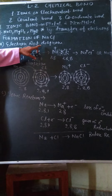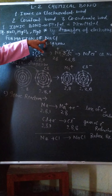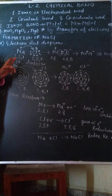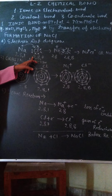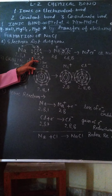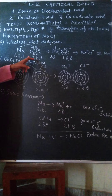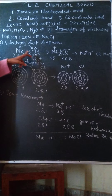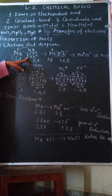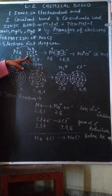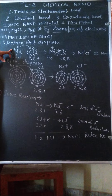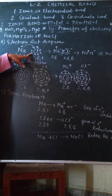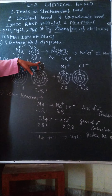So, for the electron dot diagram for the formation of sodium chloride, first we have to make the Lewis structure of sodium and chlorine. What is Lewis structure? In my previous video, I have explained it. Representation of valence electrons with the help of dots or crosses is called Lewis structure. Sodium has one valence electron and chlorine has 7 valence electrons.